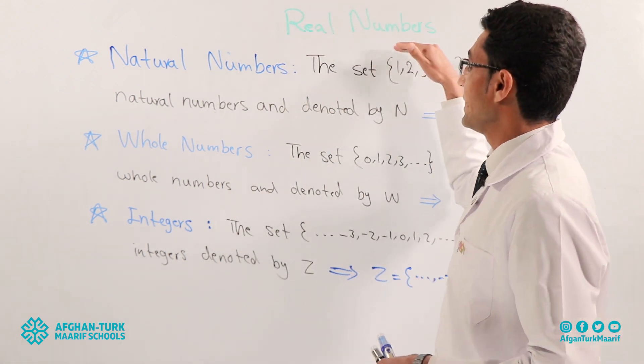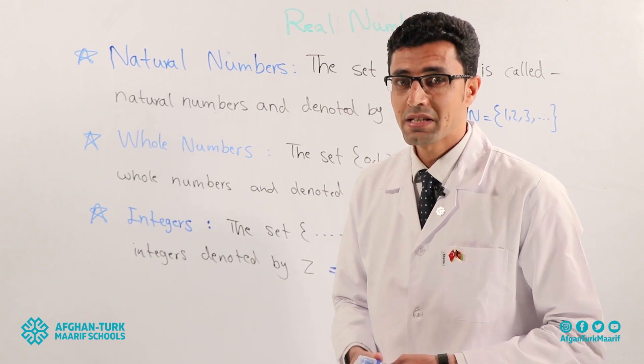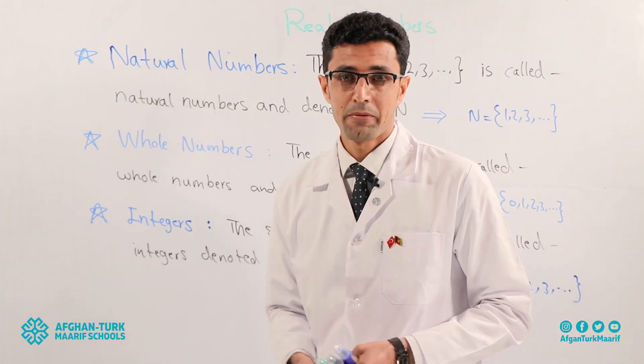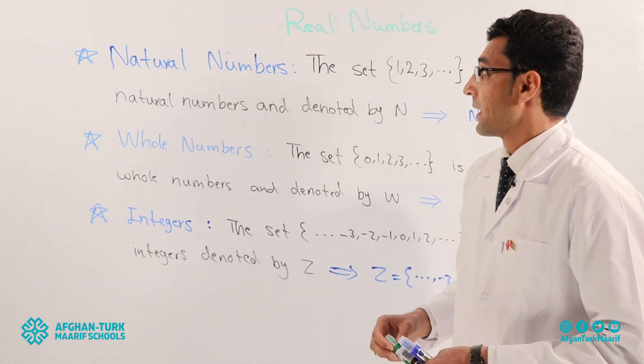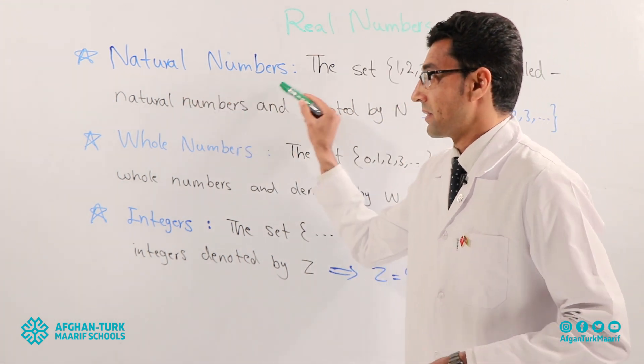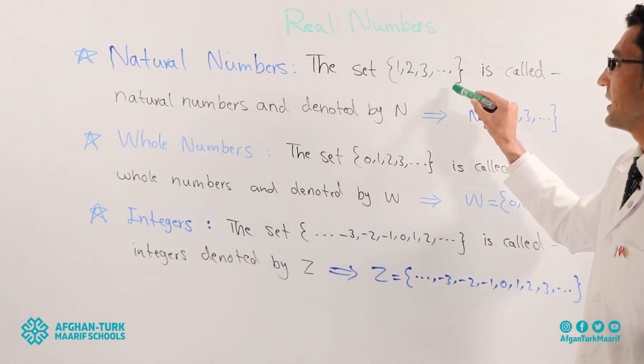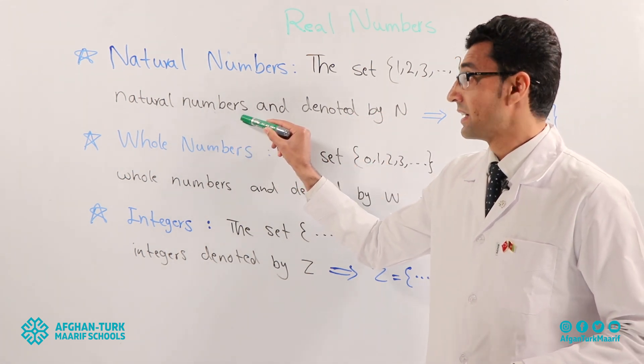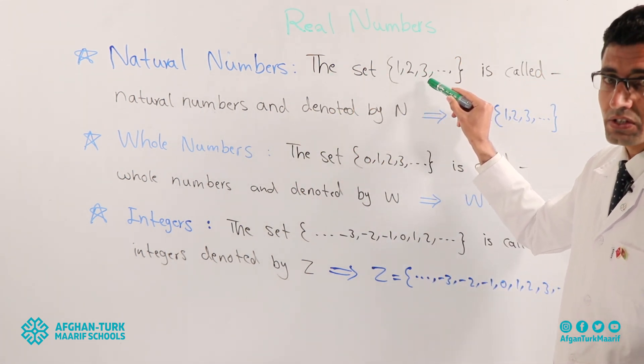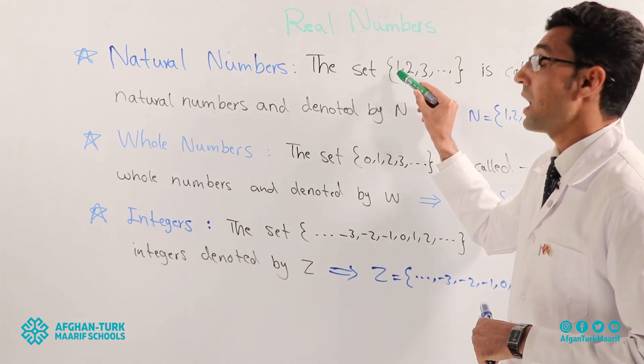Before that we talk about real numbers, at first we must know natural number. We must know natural numbers. What is natural number? The set one, two, three. Which numbers? It starts from one.